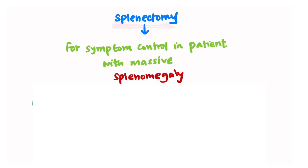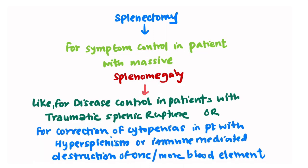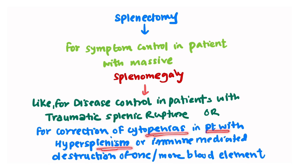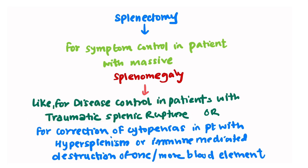Splenectomy is done for control of symptoms in patients with massive splenomegaly, for disease control in patients with traumatic splenic rupture, or for correction of cytopenias in patients with hypersplenism or immune-mediated destruction of one or more blood elements.